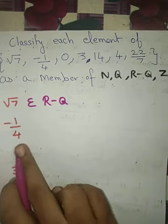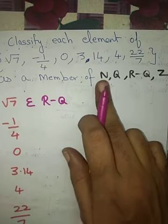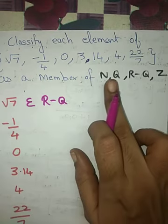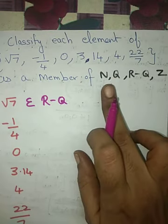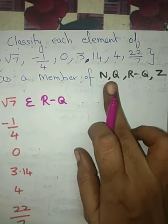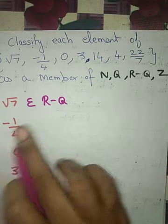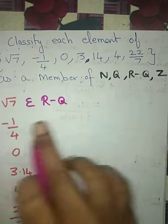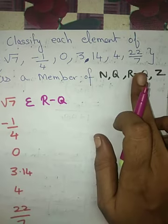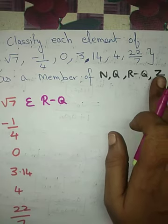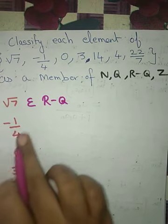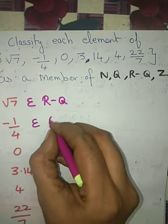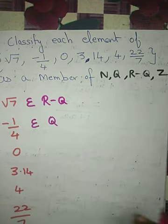Next, minus 1 by 4. Is it a natural number? No — fractions are never natural numbers. Is it a rational number? Yes, all numbers in the form of fractions are rational numbers. Is it irrational? No, there is no root symbol. Is it an integer? No, integers cannot be in the form of fractions. So minus 1 by 4 belongs to rational numbers, denoted by Q.